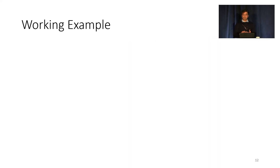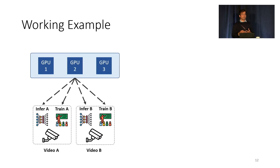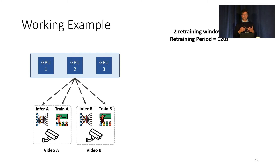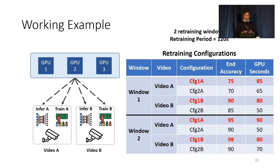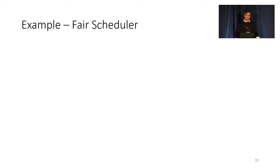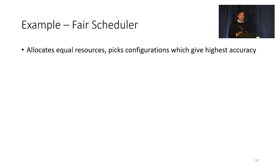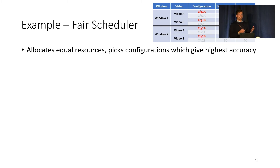Let me give you a working example. Assume a setup with two video streams serviced by three GPUs. Retraining is done twice at a period of 120 seconds, and for each video stream we have a choice of configurations — one expensive configuration achieving high accuracy, and a slightly less expensive configuration giving lower accuracy. A fair scheduler would pick the configuration with the highest accuracy and allocate equal resources to all jobs.